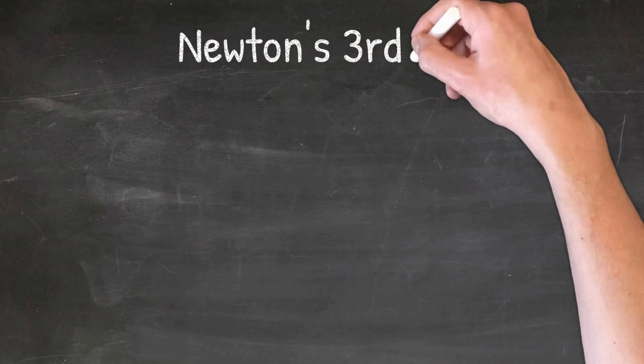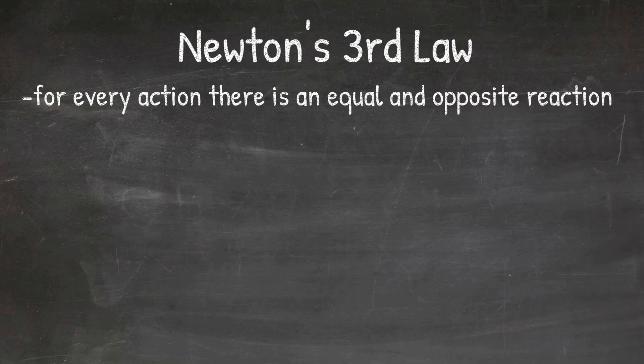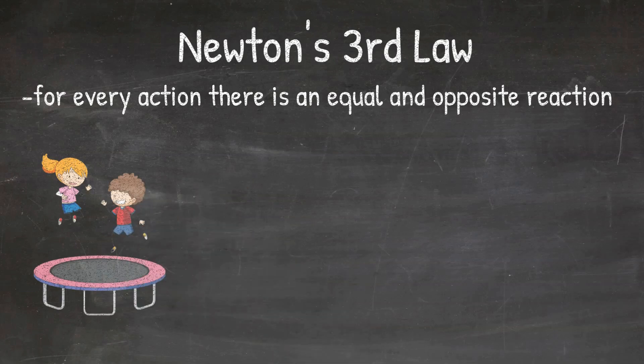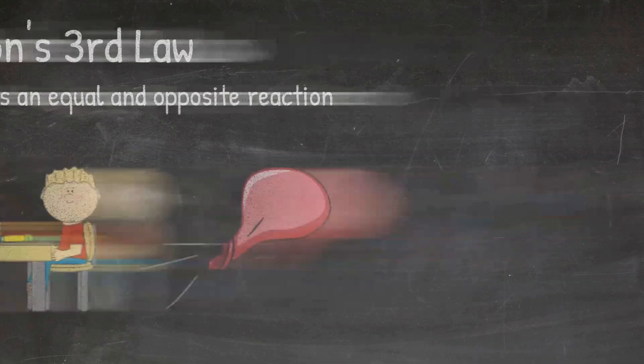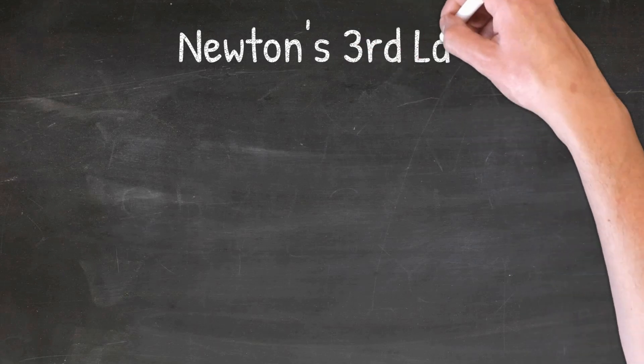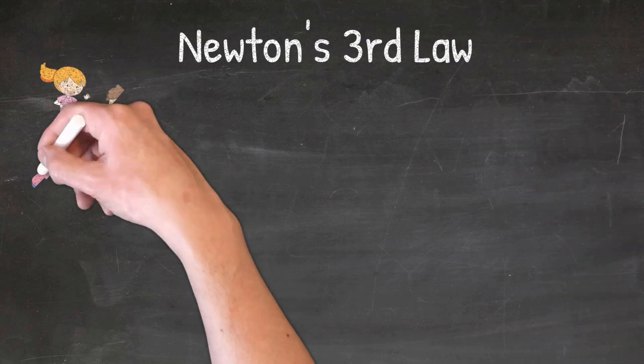Newton's third law of motion tells us that for every action, there's an equal and opposite reaction. In other words, if object 1 is exerting a force on object 2, then object 2 is exerting that exact same force back to object 1. Some examples include jumping on the trampoline, sitting in a chair, and letting go of a balloon. When looking at examples of Newton's third law, it is helpful to look at the action and the reaction. When you jump on the trampoline, you apply a force downward onto the trampoline, which is the action.